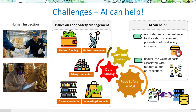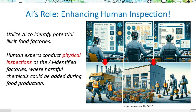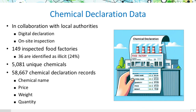While existing human inspections suffer issues such as limited manpower and funding, we believe AI can help through accurate learning to detect. We plan to use AI to spot likely illicit food factories for targeted physical checks by human inspectors. Working alongside local authorities, we've gained access to a dataset of chemical declarations from food factories. Our analysis draws from inspection records of regulatory agencies responsible for food and drug oversight.